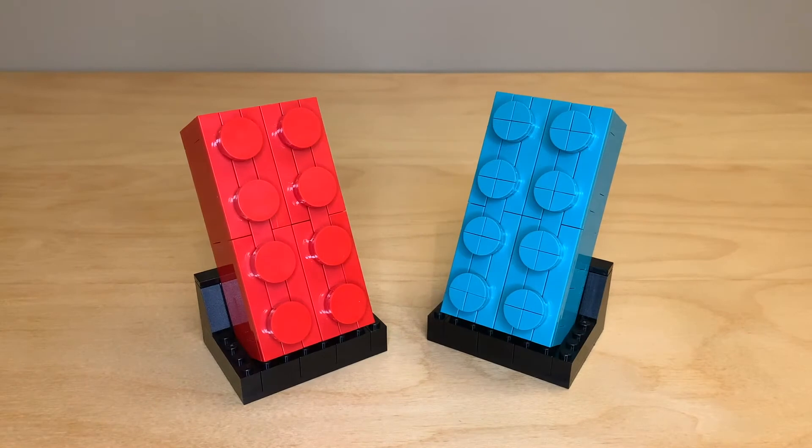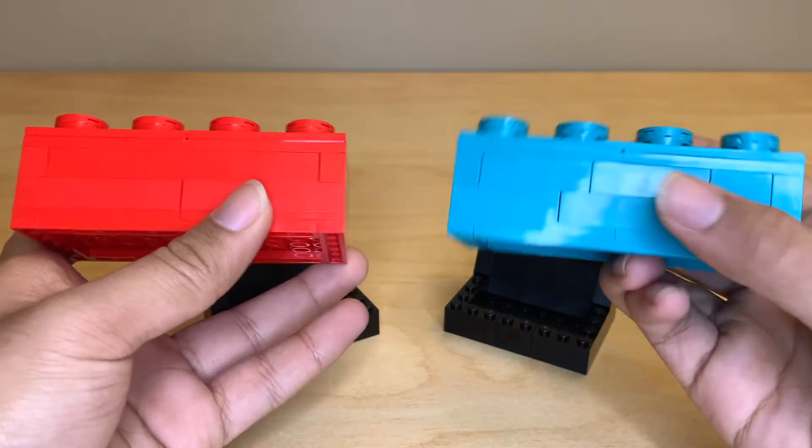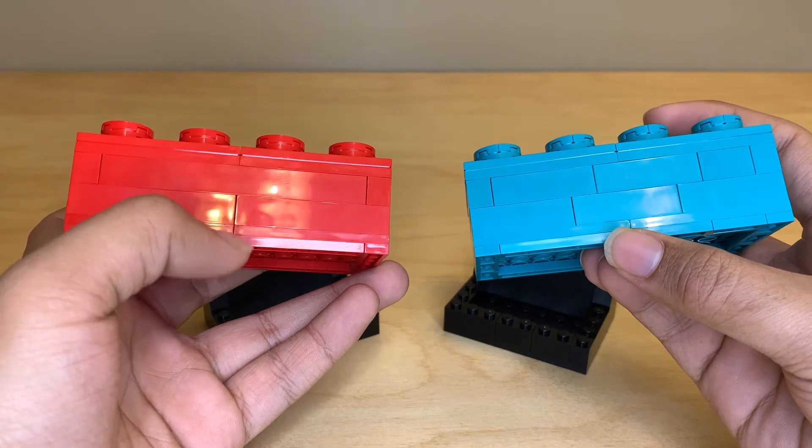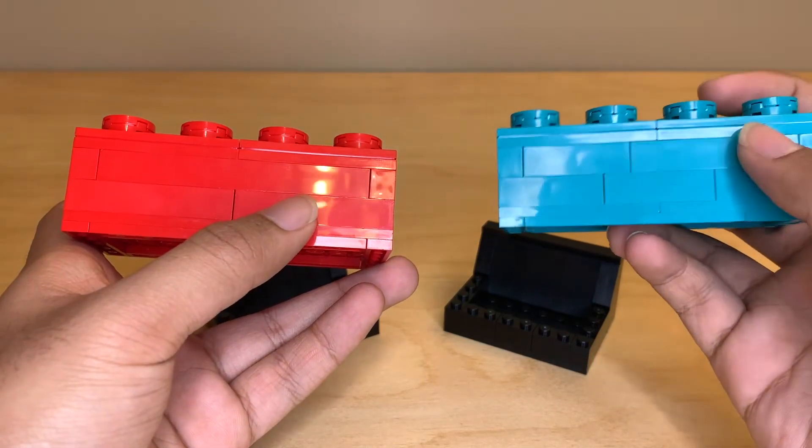So the big difference between the two of them is they're built using different pieces. So the red one uses larger bricks. You can see when you turn them onto its side that the red one is using these big 1x10 and 1x6 bricks, whereas this one is using 1x4s and 1x2s.